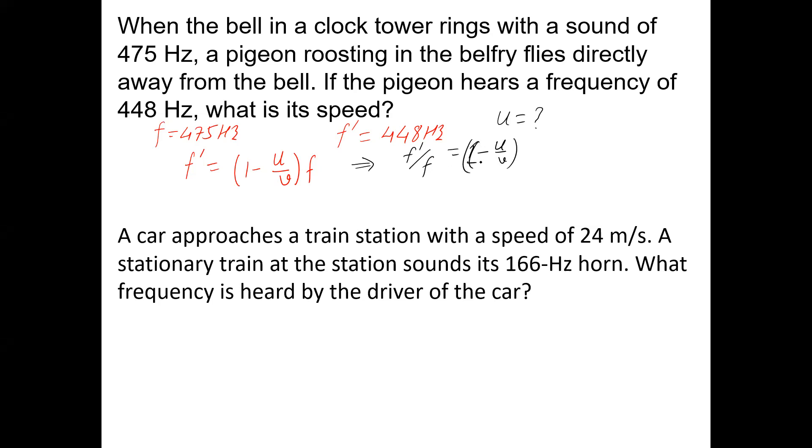And I can take this u divided by v to one side. I can add u divided by v to both sides, then I'll get 1 minus f dash divided by f. So it means u is equal to - I can multiply v both sides - u = (1 - f'/f) × v.